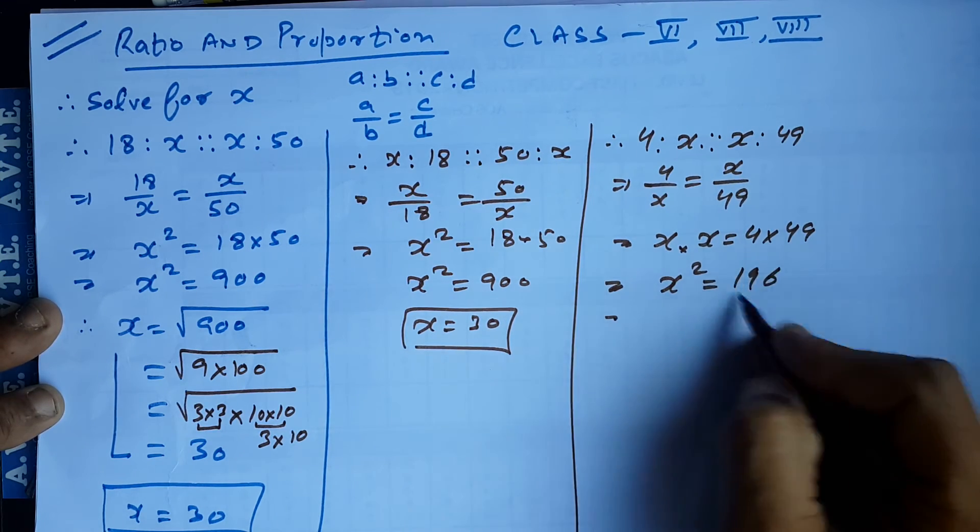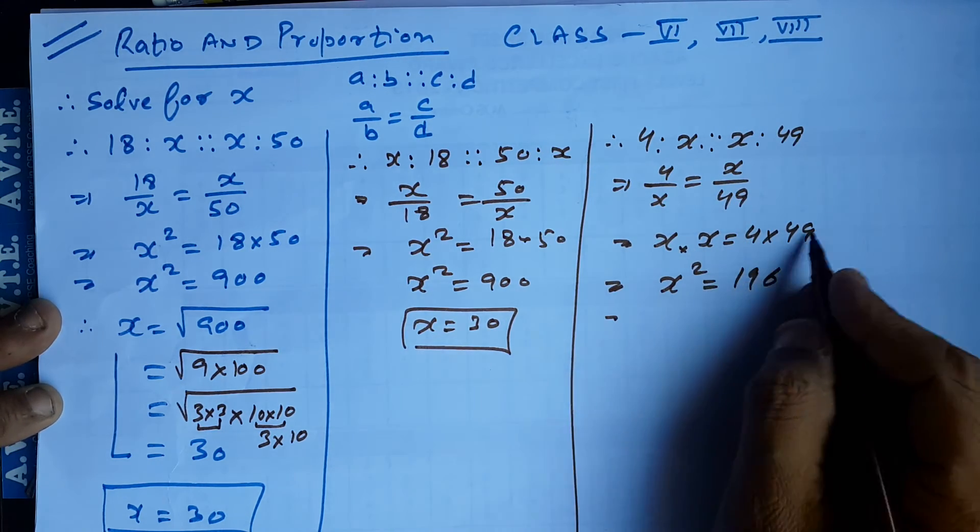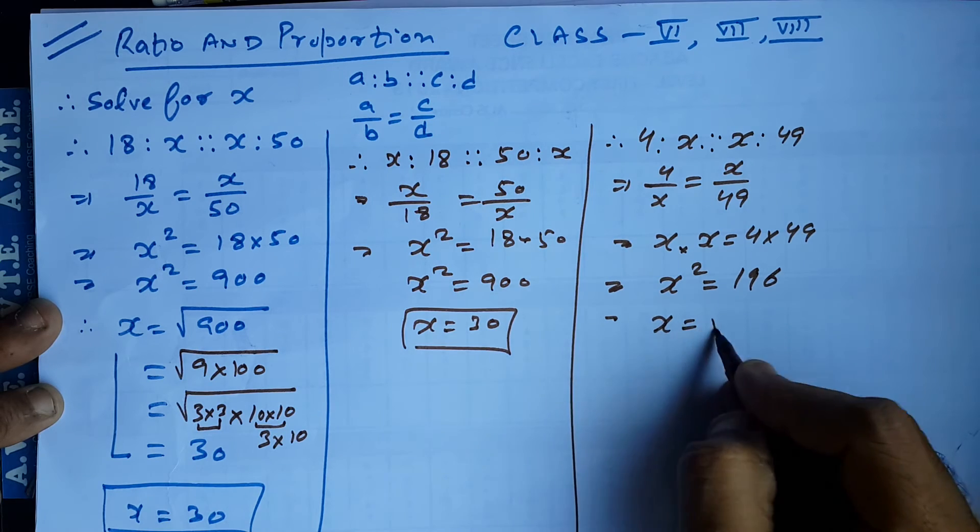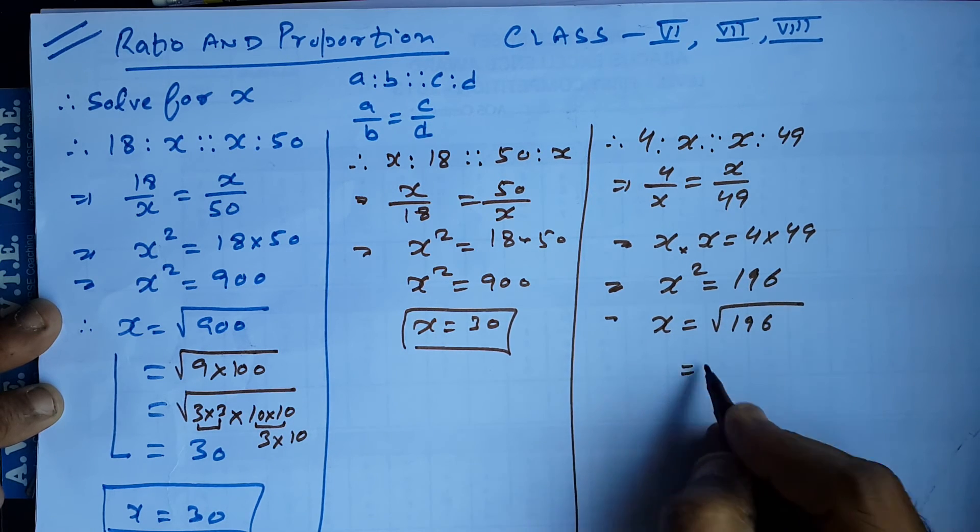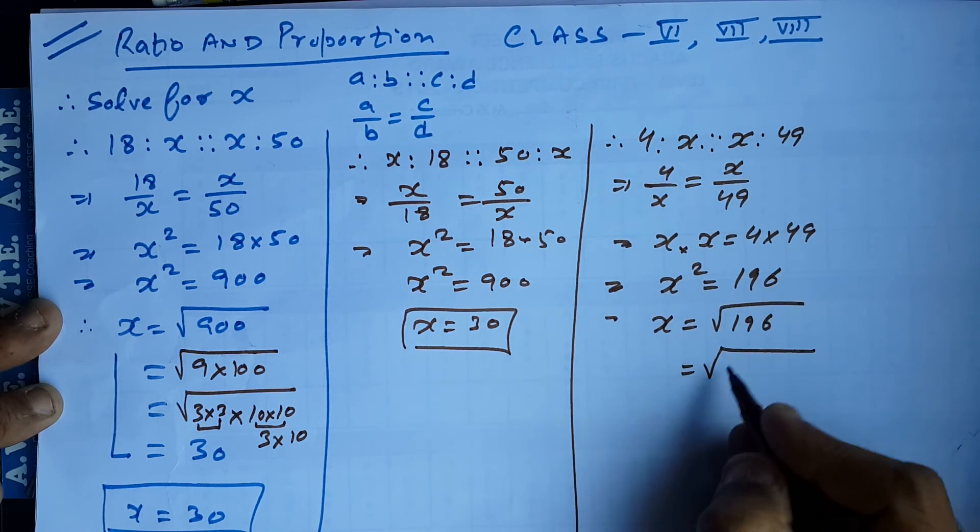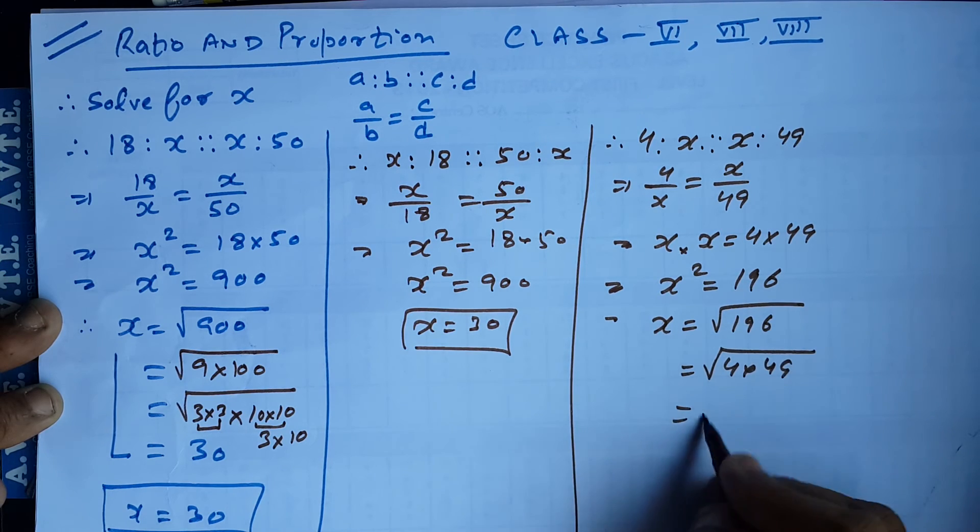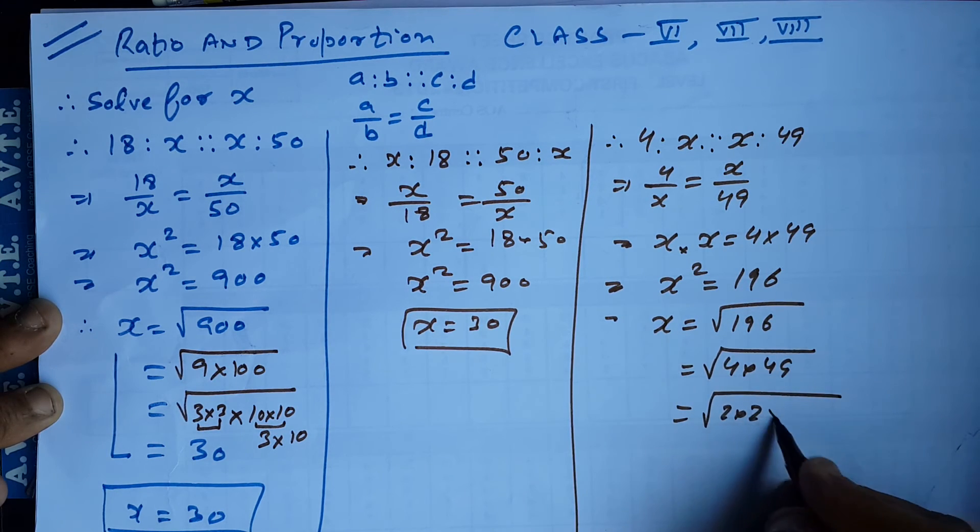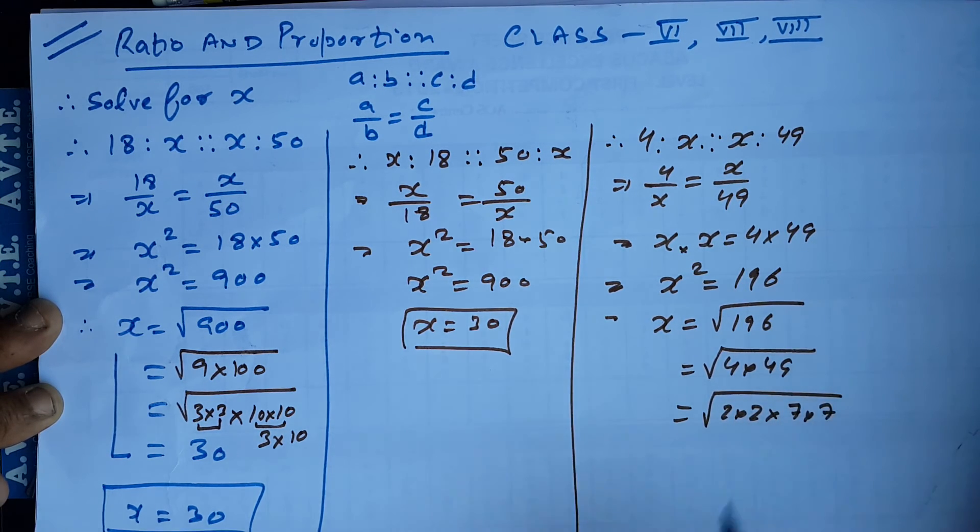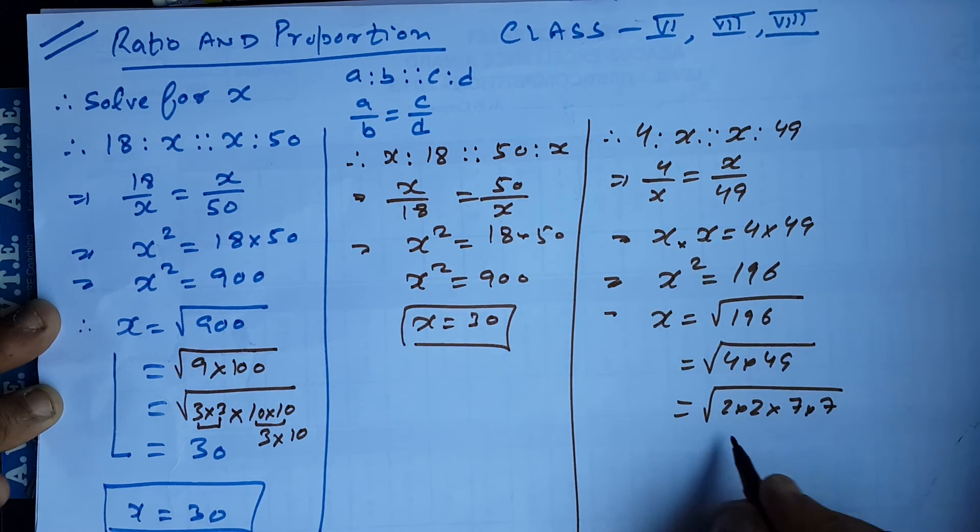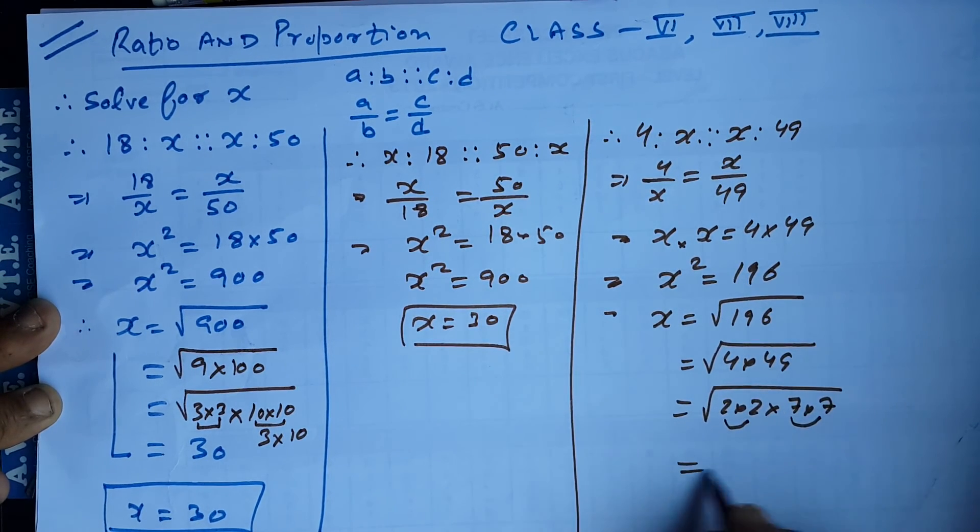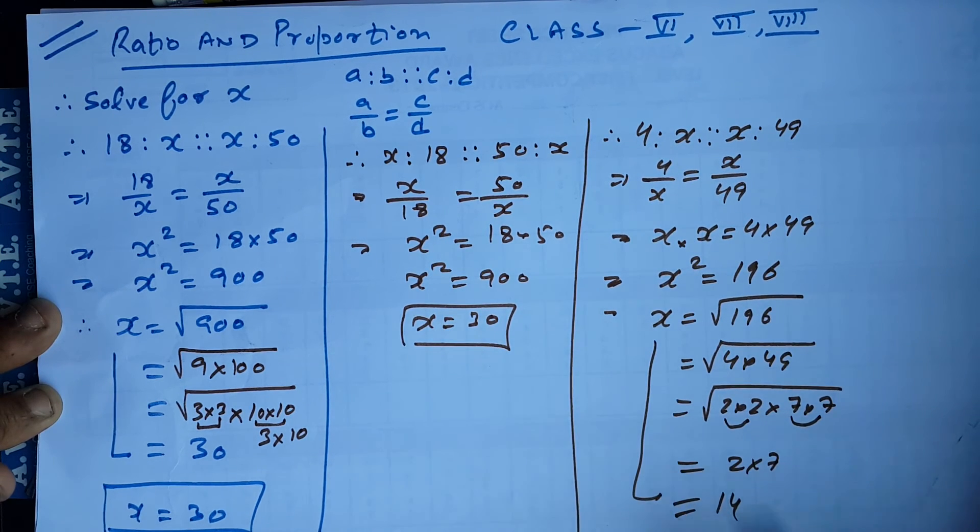So here, what we do? Sometimes we have to multiply them and sometimes we have to take the same factor like this. We take a factor of 196 as 4 and 49. You have to make a pair 2 into 2, 7 into 7. Now you all got it. What to do? Take 2 common. Take 7 common. This is 2 into 7. The answer is what? 14.